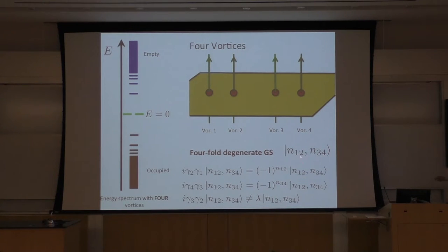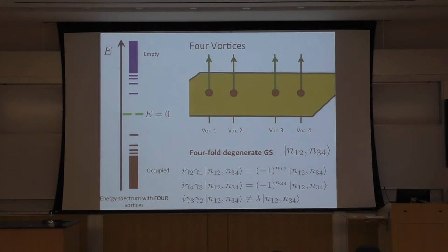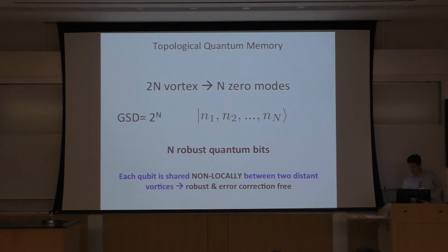So what we saw is: when we have 2N vortices, we get N zero modes. Each zero mode can accommodate one or zero electrons, so it's like a qubit. The ground state degeneracy is two to the N. So I get N quantum bits by having 2N vortices. And they are robust. Why? Because for every two vortices I get one qubit, and this information is stored non-locally between two distant objects — between gamma one and gamma two. So the information is not at one particular point of space, and because of that, a local perturbation cannot change the information.